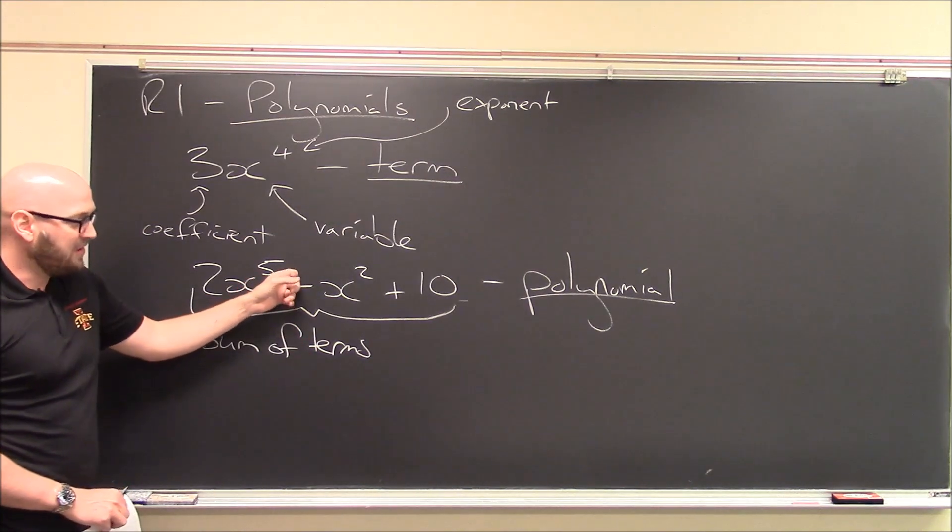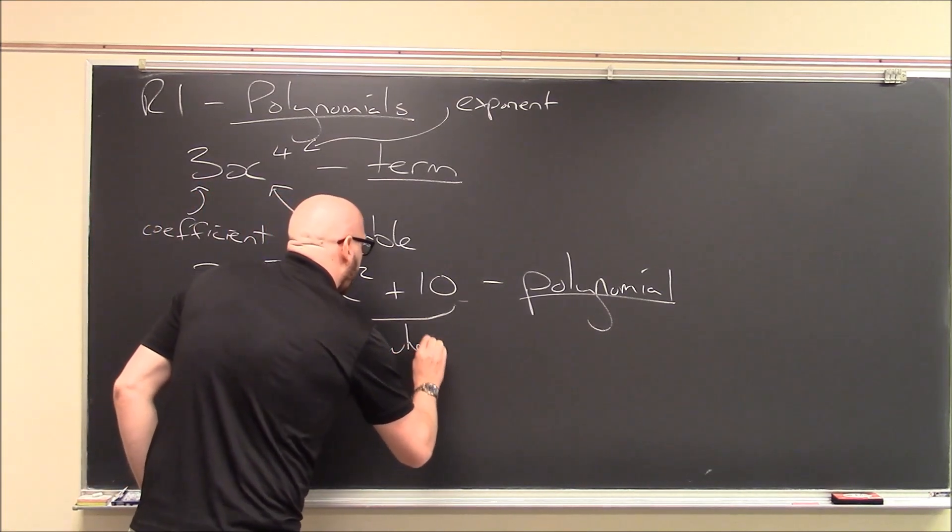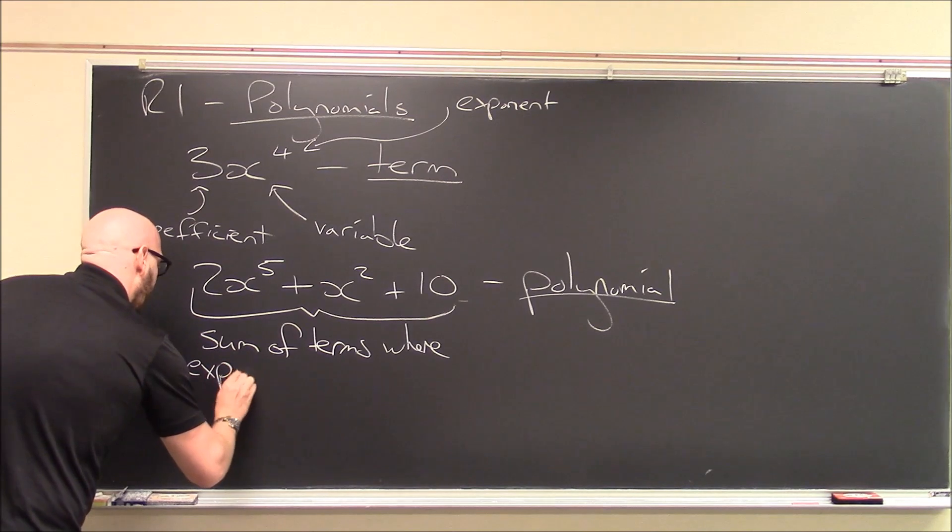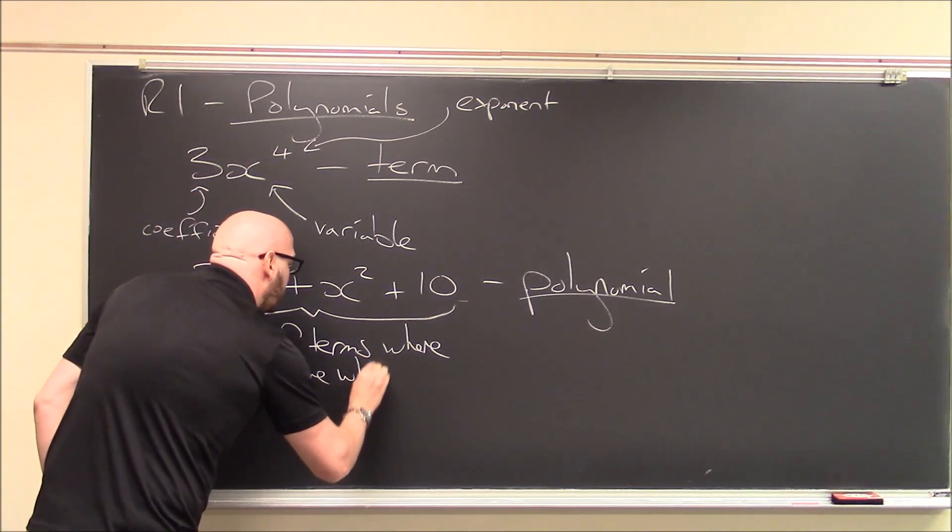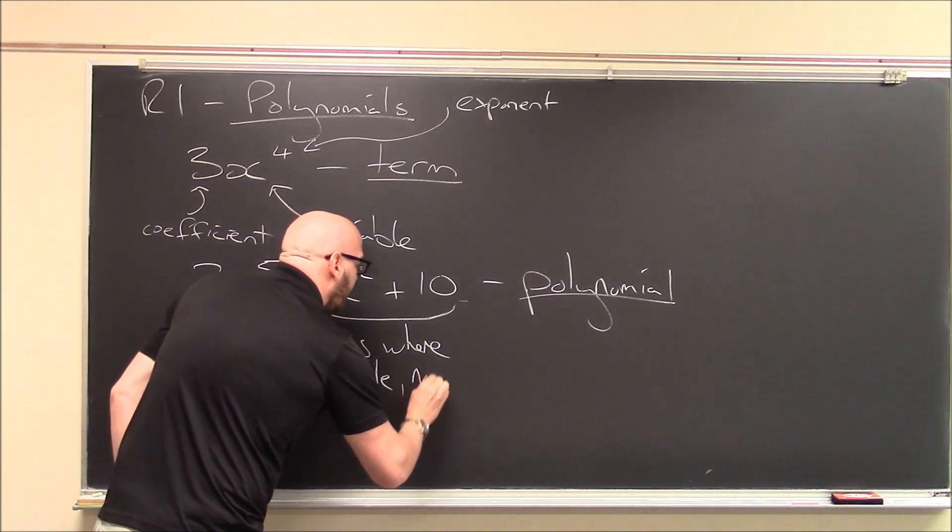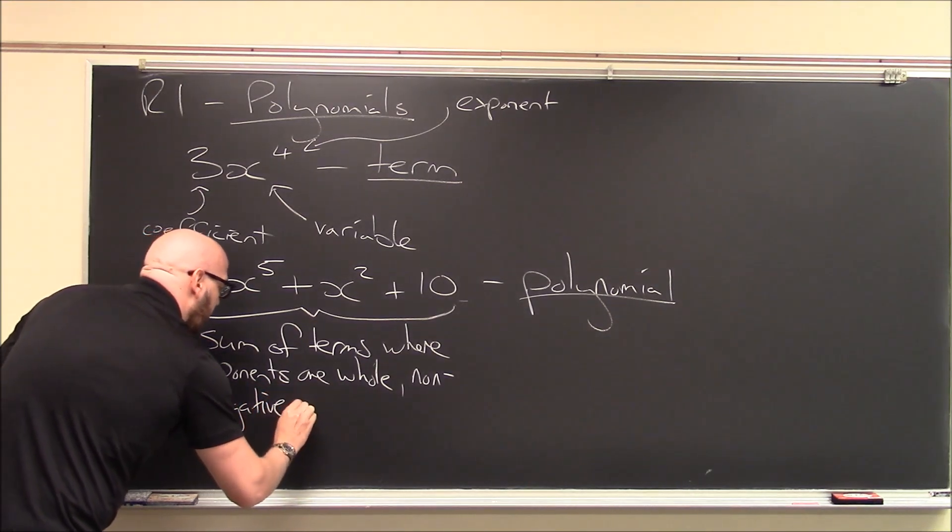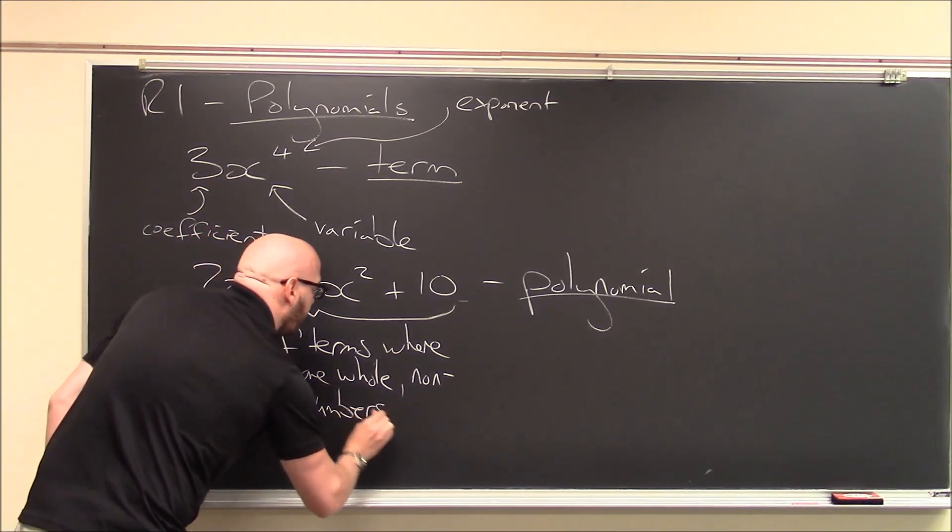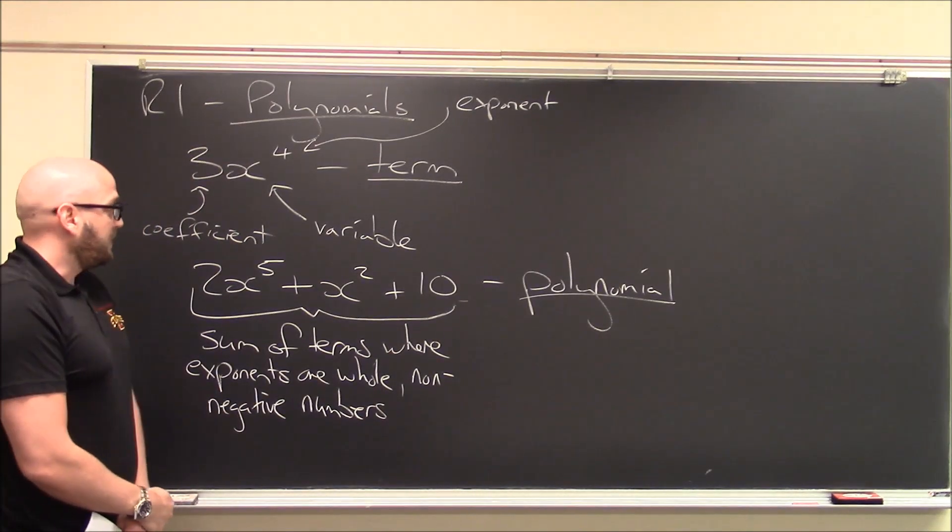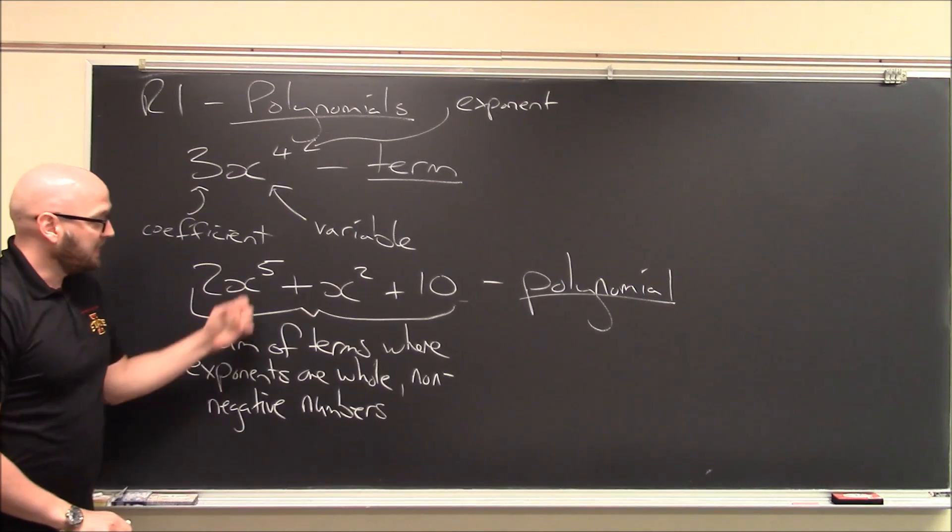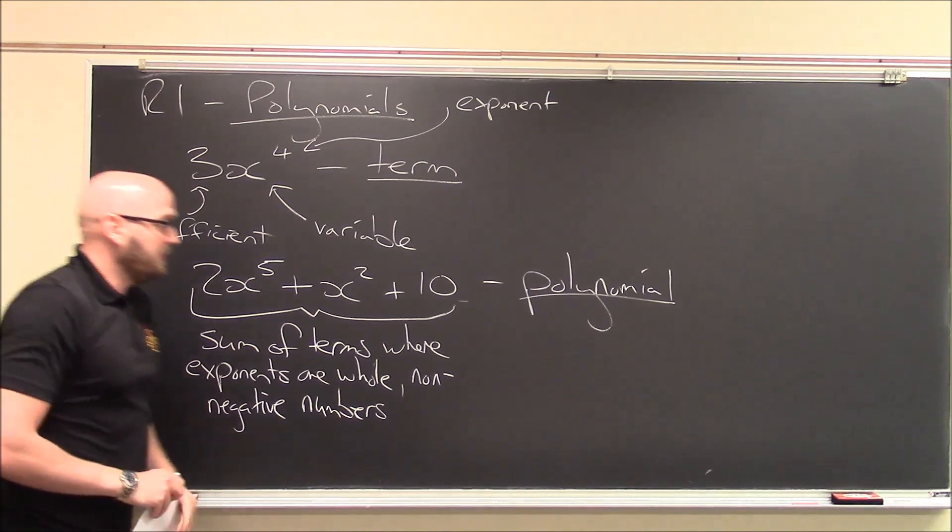Not like 5.2 or 2 thirds or anything like that. So sum of terms where the exponents are whole non-negative numbers. All right, so there's a polynomial. This is an example of a polynomial. It's a sum of these terms where the exponents are whole numbers and never negative. So we'll do a few more examples.